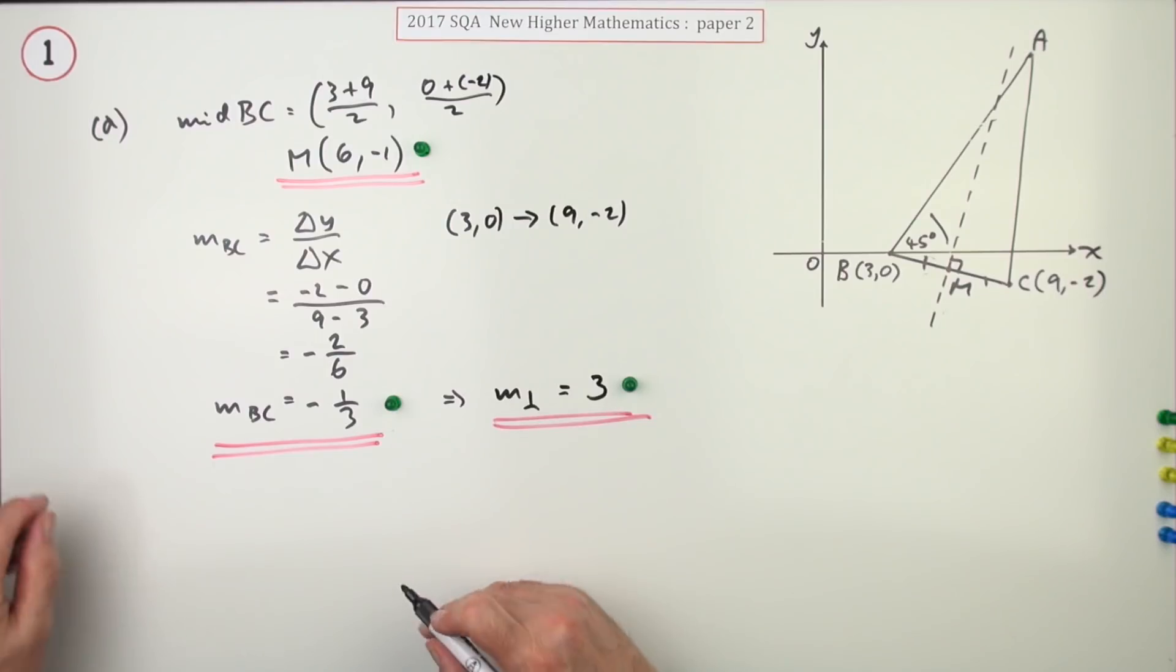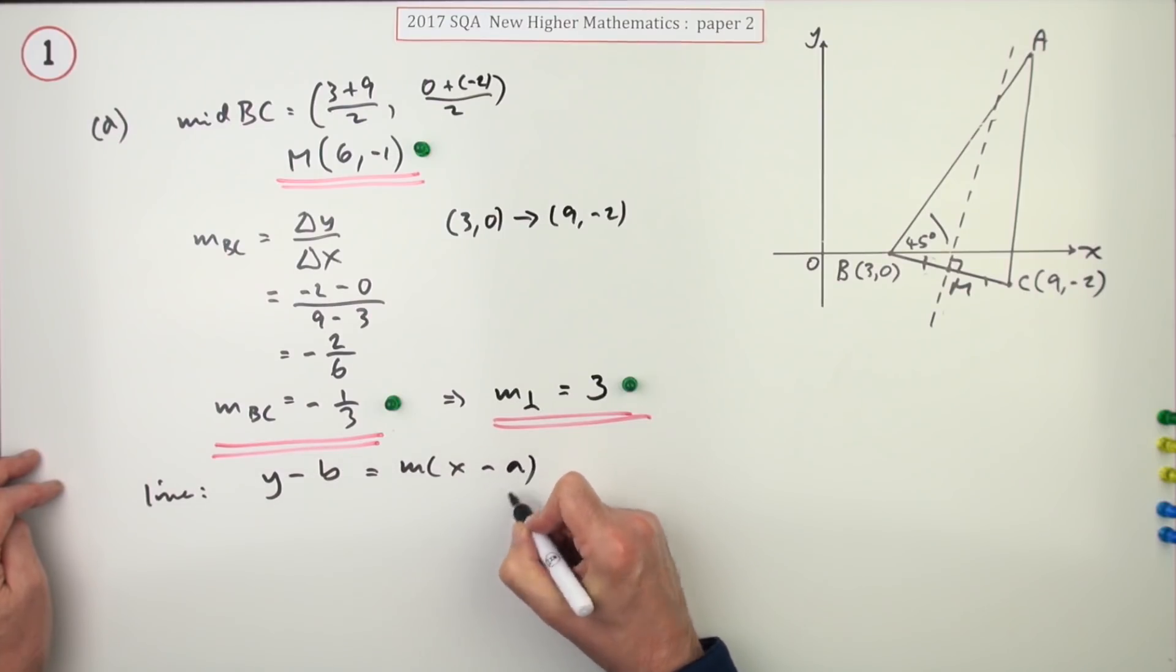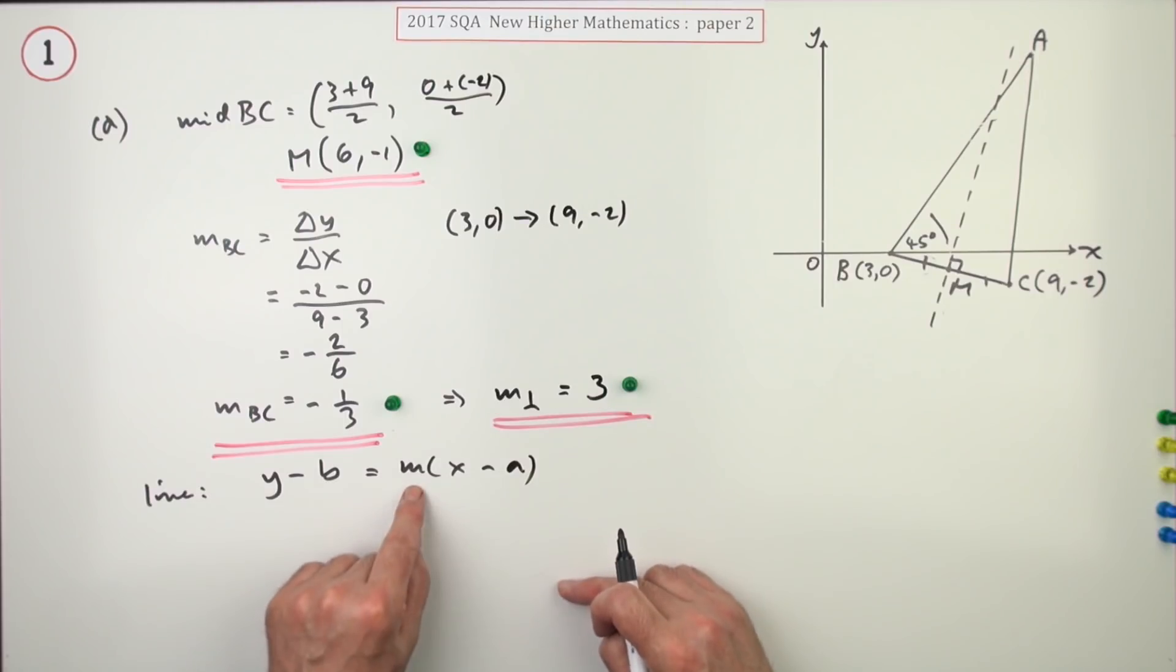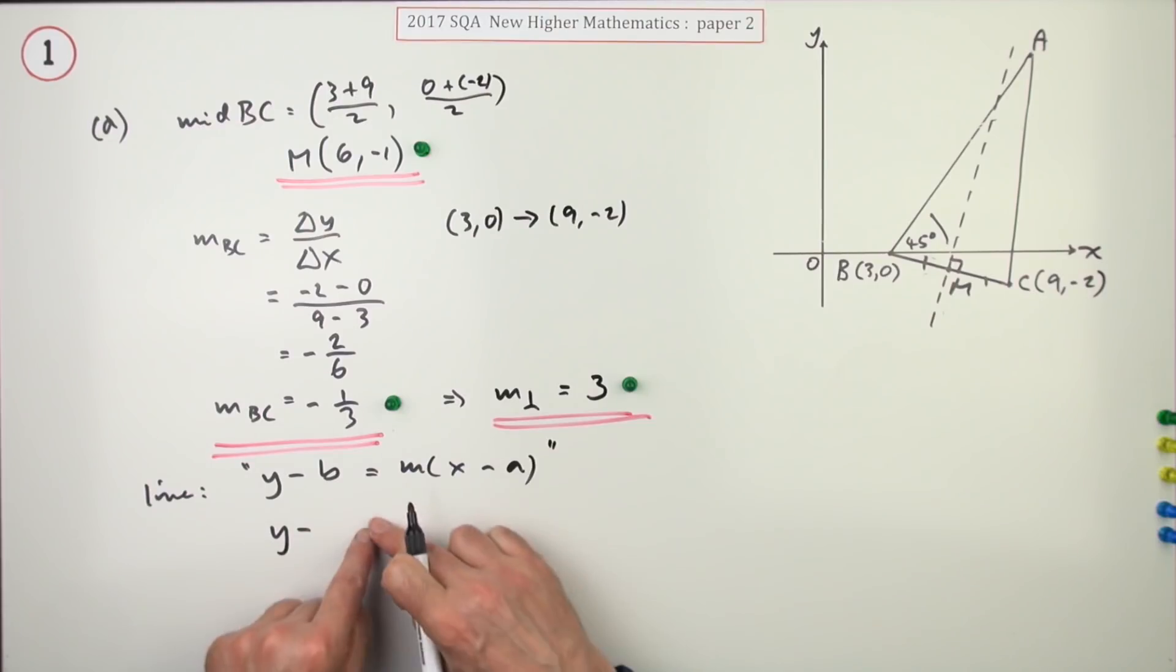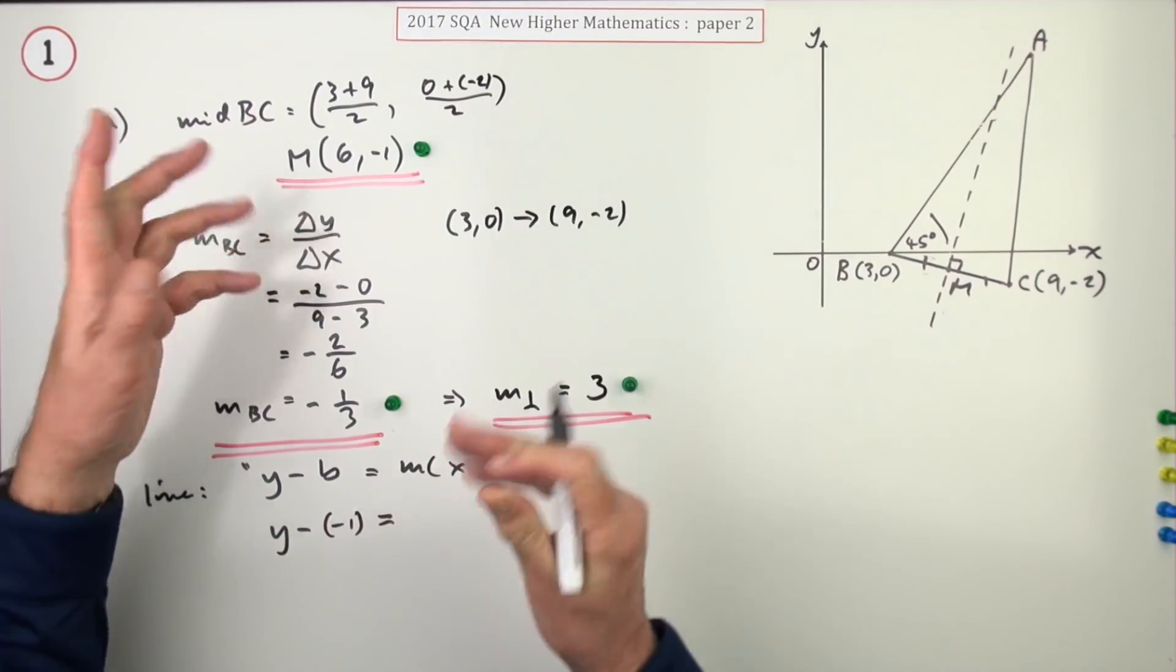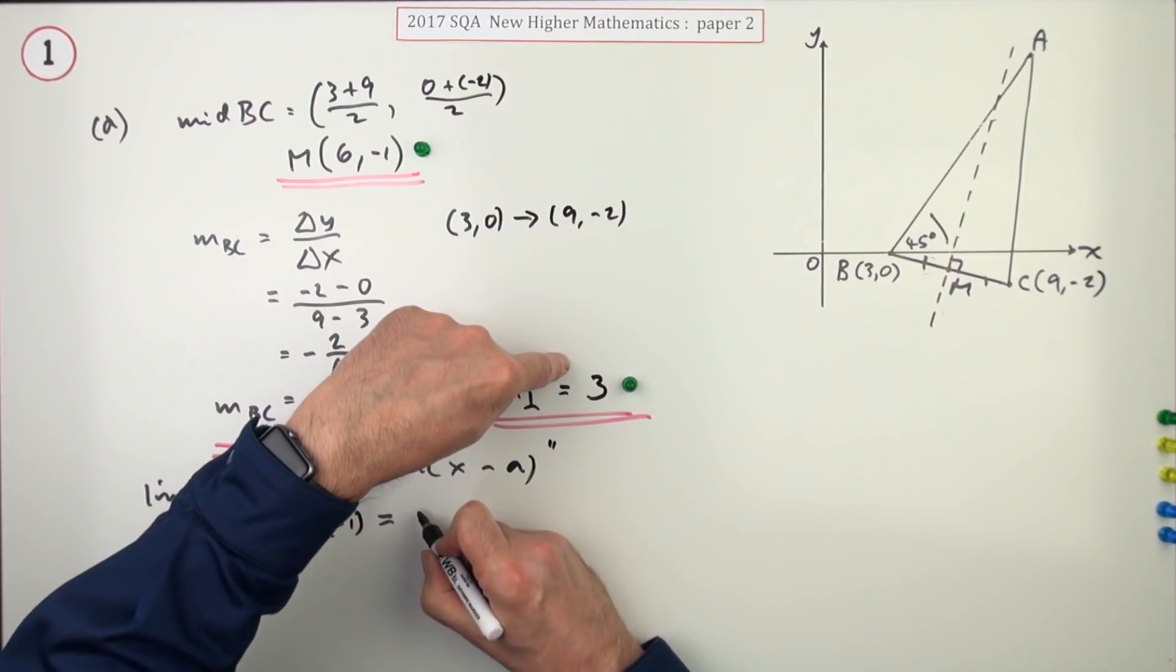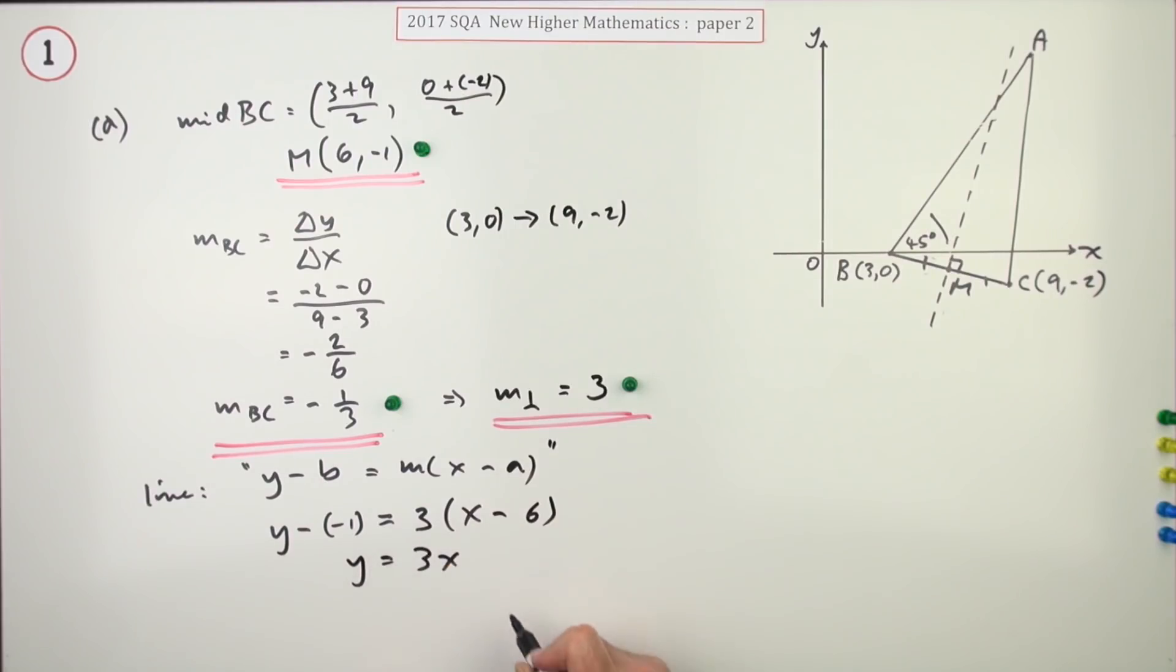I'm just tumbling on here. Lastly, what's the equation of the line? Well, I'm going to use y - b = m(x - a). So, y minus the y coordinate at the point it's going through, which is the midpoint. Y minus the -1, or if you're brave, you could leap in with y + 1. It's the gradient, which is 3, times x minus the x coordinate, which is 6. And then tidy that up. Three times x minus 18, that's a positive one, minus another one, minus 19. And there's the last mark.